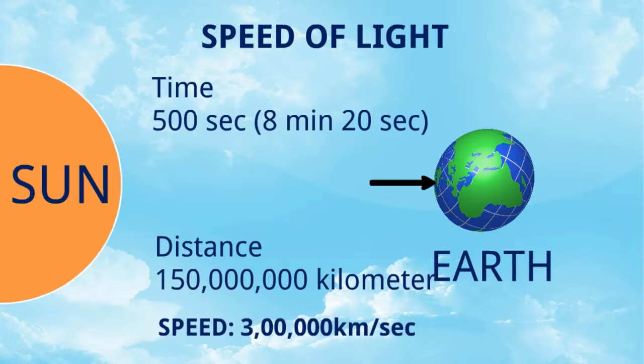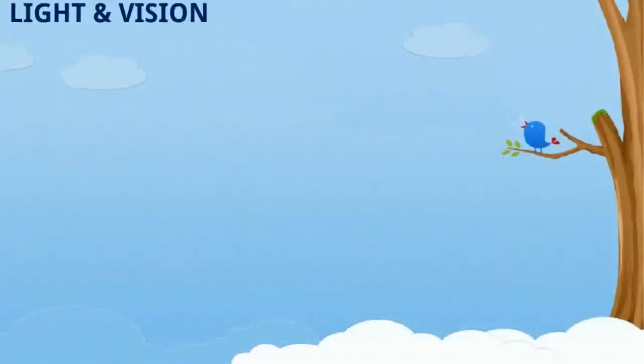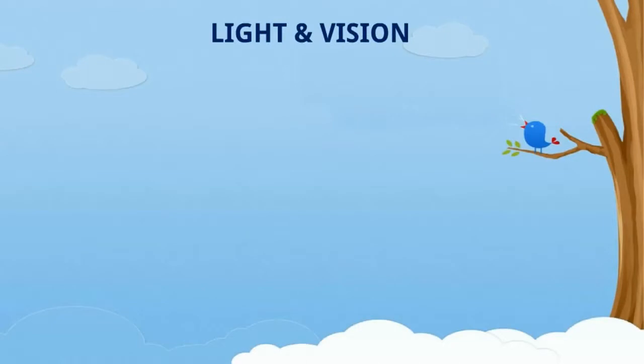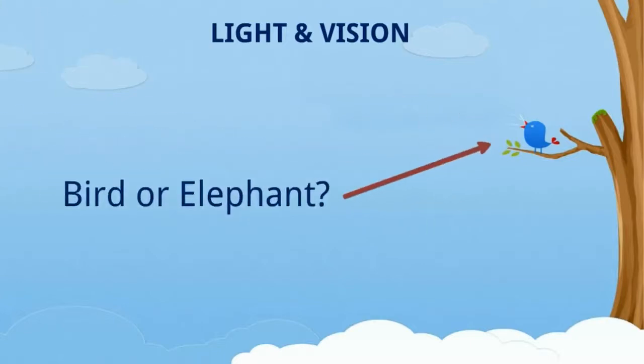Light and vision: see, there is one bird. How do we understand that this is a bird? Can anybody say it's not a bird, it's an elephant? How do you understand that this is a bird? Is it because of light?